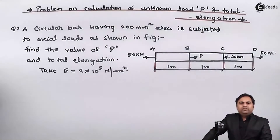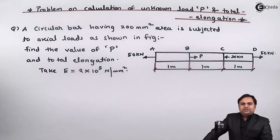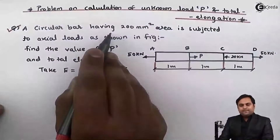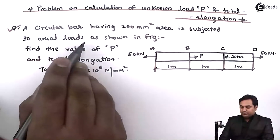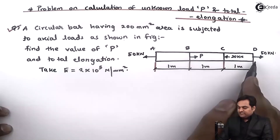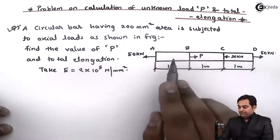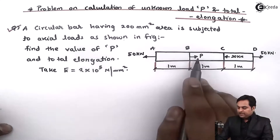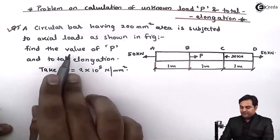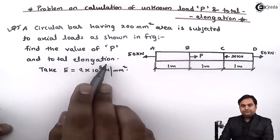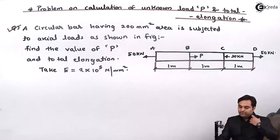In this video we will see a problem on calculation of the unknown load and total elongation. A circular bar having 200 mm square area is subjected to axial loads as shown in figure. The bar is divided into three sections AB, BC, and CD, each having one meter length, with loads acting at various points. Find the value of P, the unknown load, and the total elongation. Take E as 2×10⁵ N/mm².